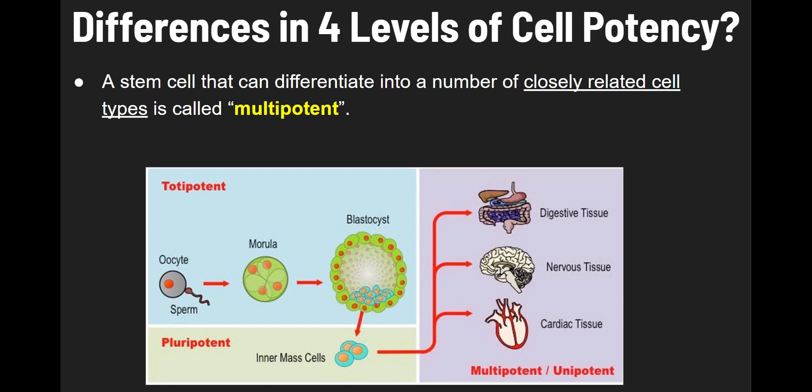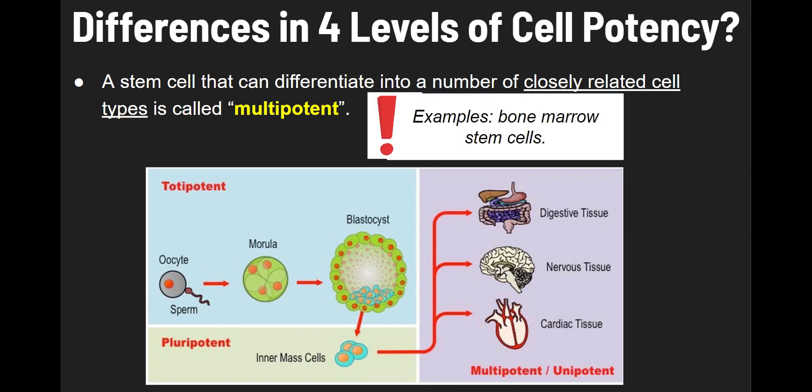Then you have the multipotent level. This is a stem cell that can differentiate into many closely related cell types. The key here is that the types this cell can differentiate into have to be pretty closely related. An example of a multipotent stem cell would be bone marrow stem cells.